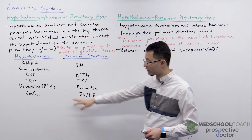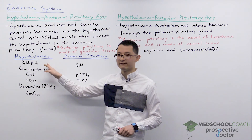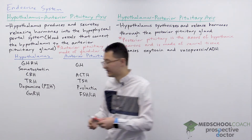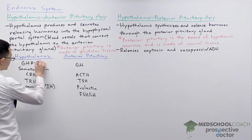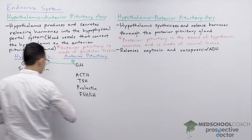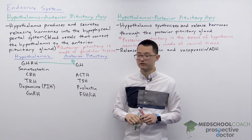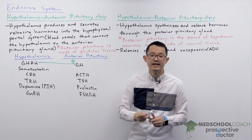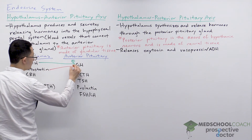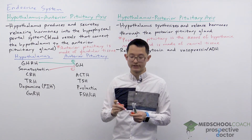There are a number of different releasing hormones that the hypothalamus produces. First, we have GHRH — growth hormone releasing hormone. Based on its name, it's not surprising that GHRH stimulates the release of growth hormone (GH) from the anterior pituitary gland. We also have somatostatin, which is an inhibitory hormone that inhibits the secretion of growth hormone from the anterior pituitary gland.